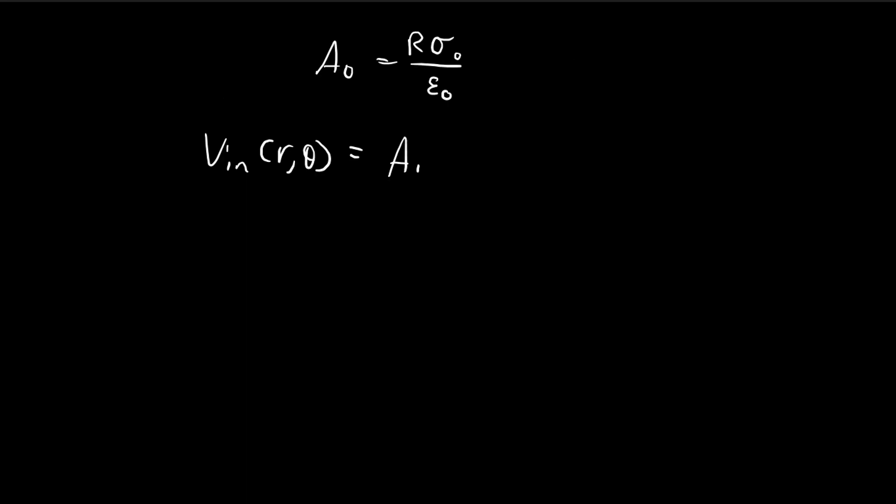So we have a_0 r to the power of 0, p_0 cos theta. Both of these equal to 1, so it's a_0. So inside of the sphere, the potential is a constant.